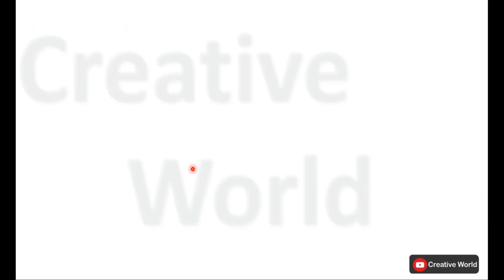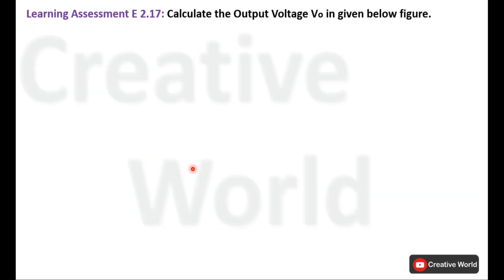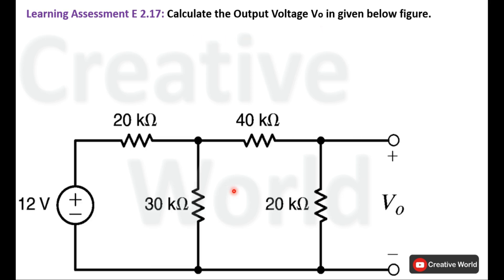Now let's move towards the problem. Learning assessment E2.17: calculate the output voltage V0 in the given figure. This is the circuit diagram. We have to calculate the voltage across the 20 kilo ohm resistance.